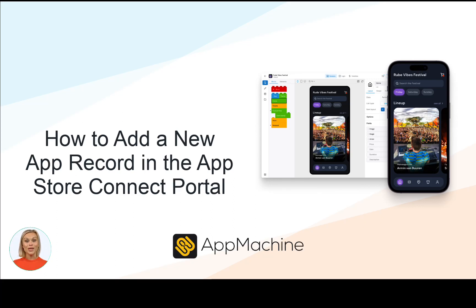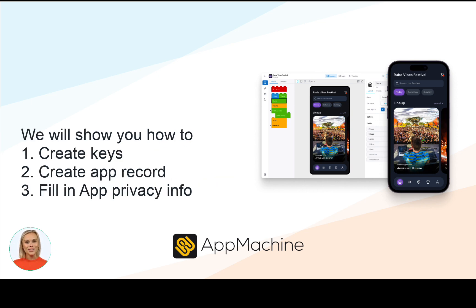In this video, I will show you how to create a new app record in the App Store Connect portal. Before you can upload a build of your app to App Store Connect, you will create this app record. It's basically the shell in which your App Machine app will be nested. You will need to upload some of the app information in App Machine so App Machine will be able to upload your app for you.